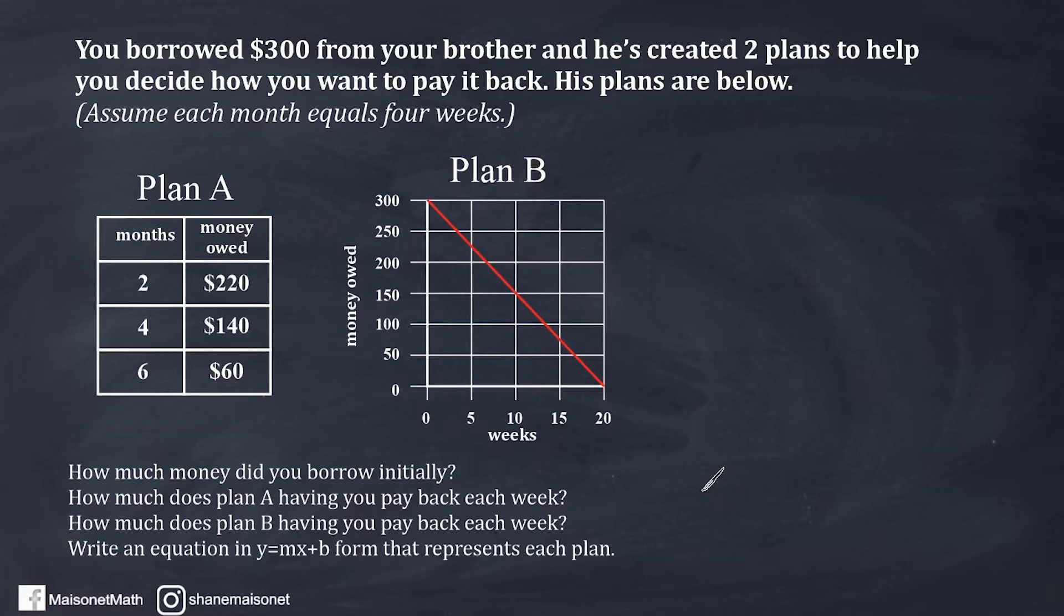So let's go ahead and read this problem and see what we have to do here. It reads that you borrowed $300 from your brother and he's created two plans to help you decide how you want to pay it back. His plans are below. Assume each month equals four weeks.